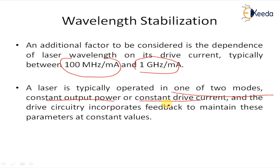Keeping the drive current constant ensures that the laser wavelength does not shift due to current changes. However, as a laser ages, it requires more drive current to produce the same output power, so the output power may decrease with time. On the other hand, keeping the power constant may require the drive current to be increased as the laser ages, introducing a small wavelength shift.